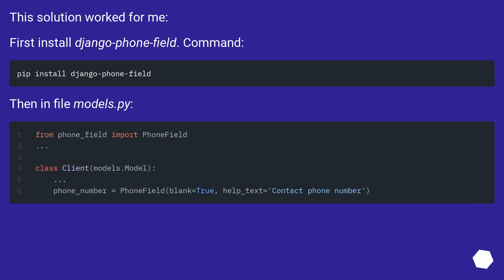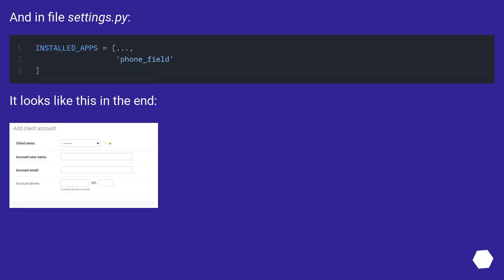This solution worked: first install django-phone-field via the command line, then configure it in models.py and settings.py. It looks like this in the end.